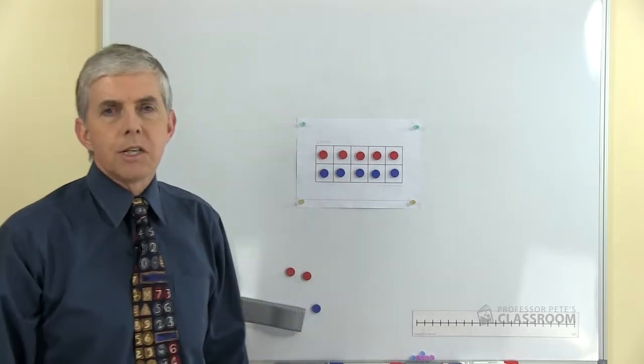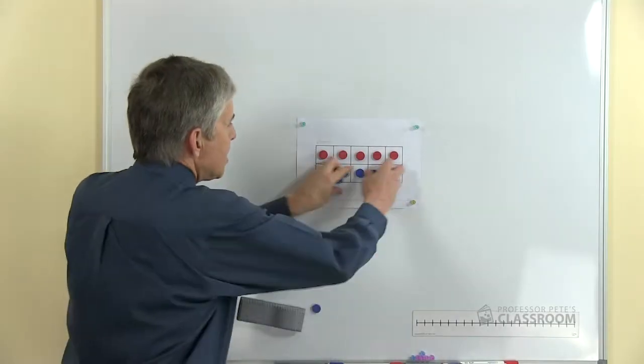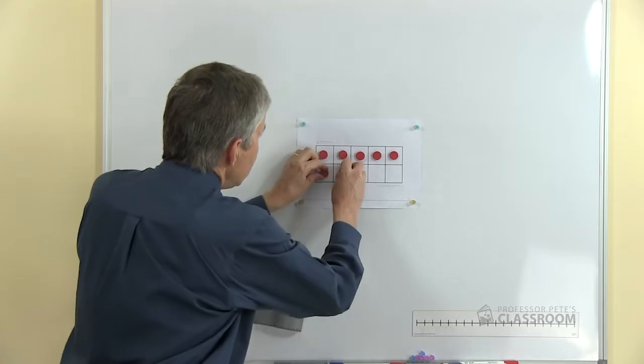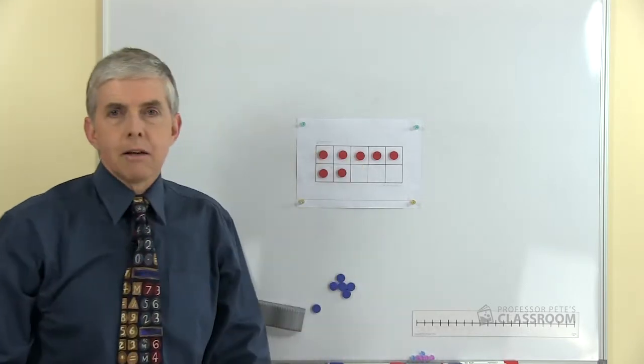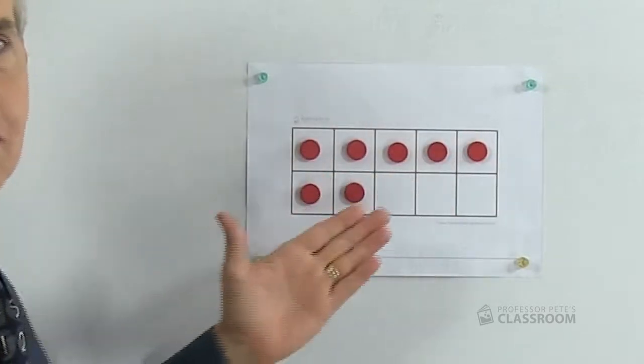Ten frames are ideal for this set of number facts because they have ten spaces. So if I remove those and put seven red counters, the child can subitize the number of counters and see that's seven.